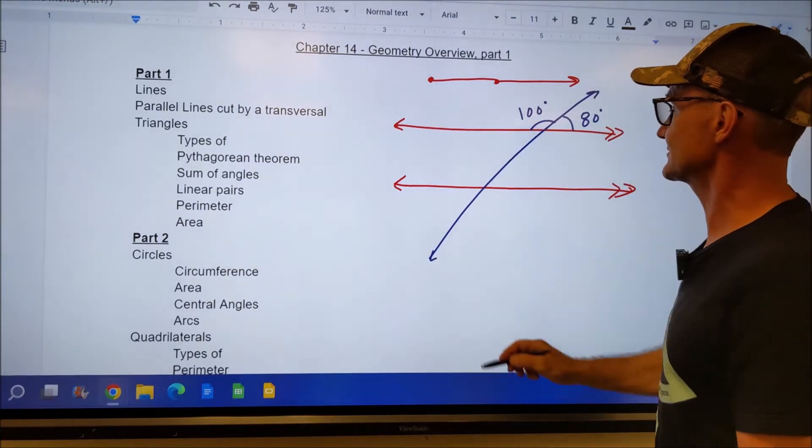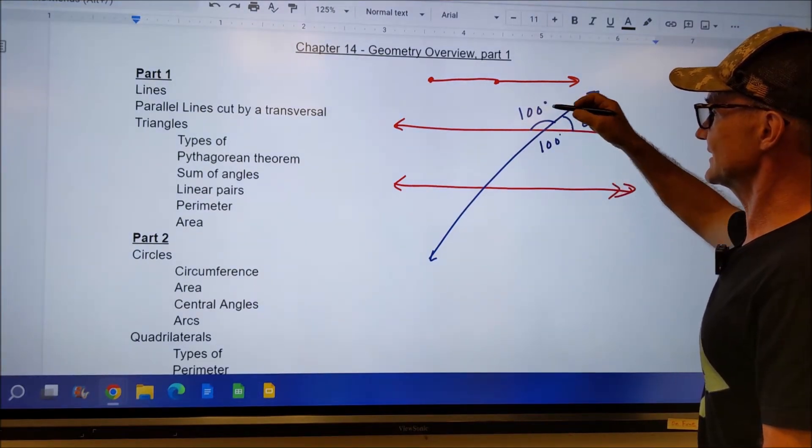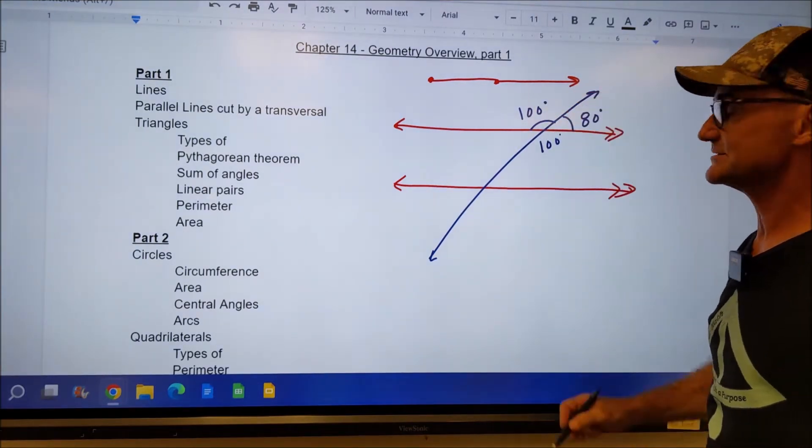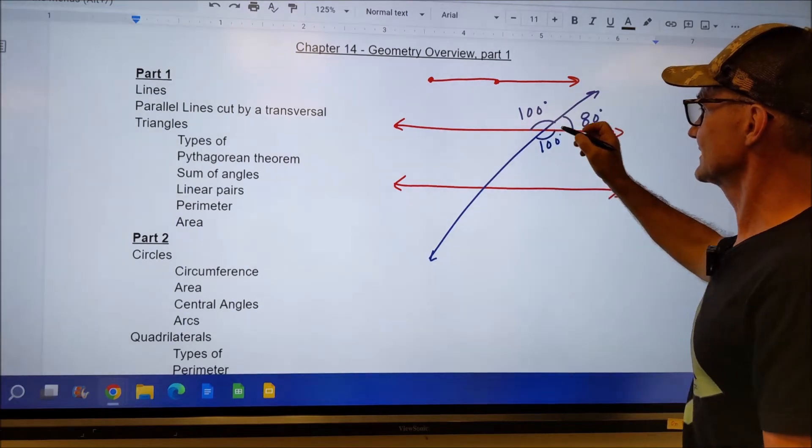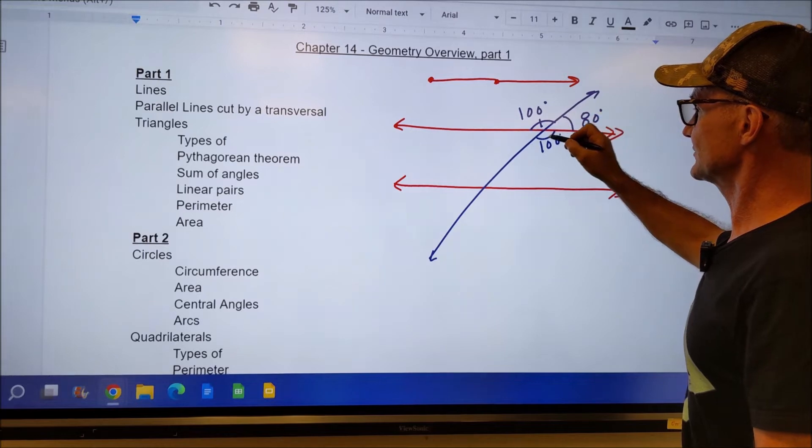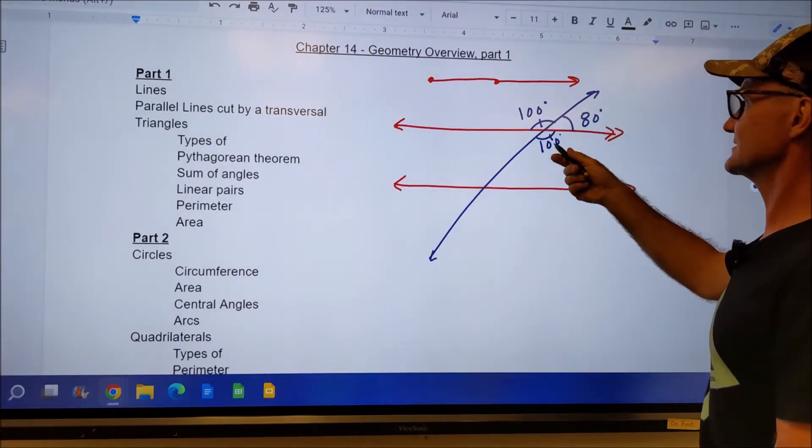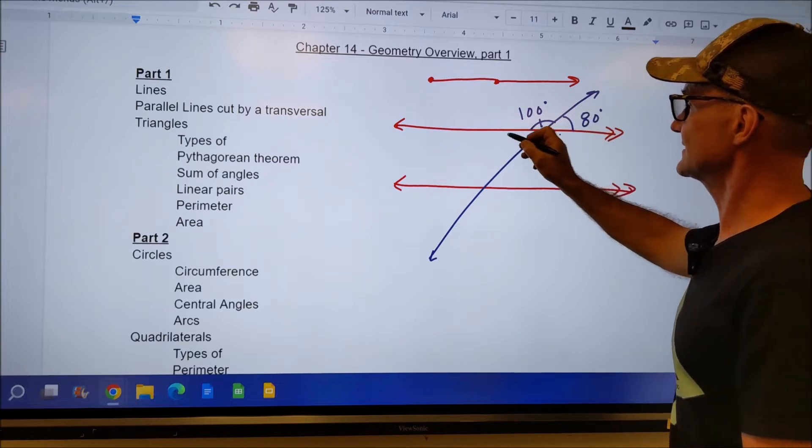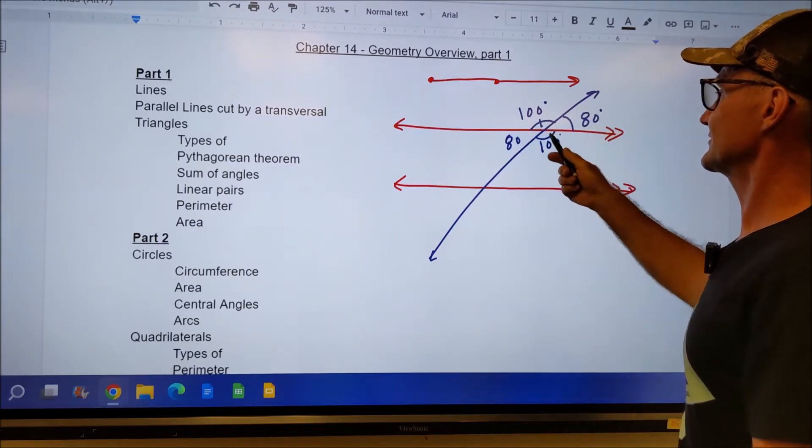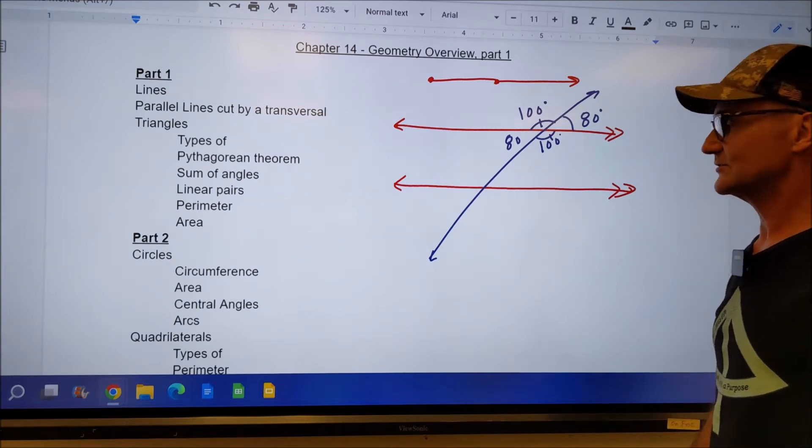This blue line is my transversal. This angle and this angle are considered vertical angles. They are equal. They are opposite each other and they are equal. The way you sometimes note equal is you put a little line there to say they are congruent. If that's 100, this is 100. If this is 80, then this is 80. Then now I have those four angles and these four angles are going to work out the same way as well.